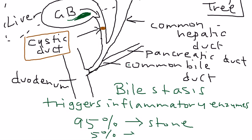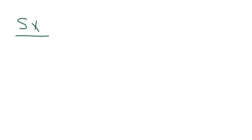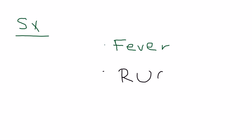95% of the time cholecystitis is caused by a stone. 5% of the time it can be acalculous, meaning there is no stone. The theory is that inflammation happens due to other reasons such as ischemia or infection, but for the most part it is a stone.